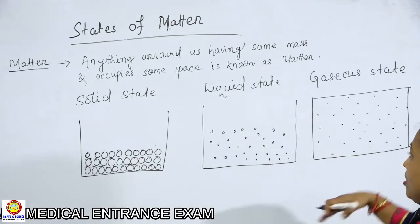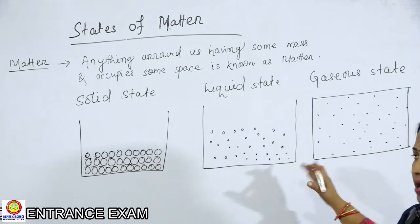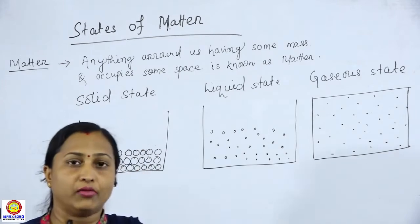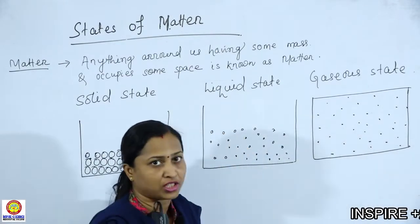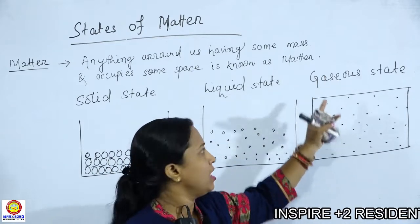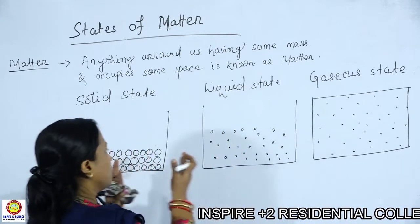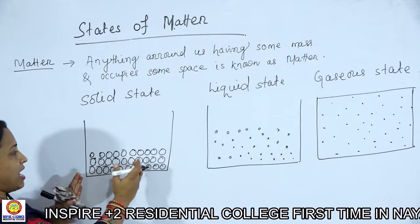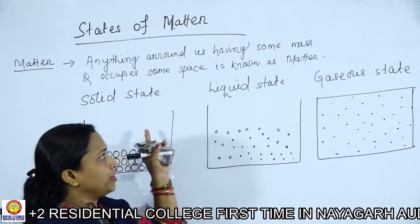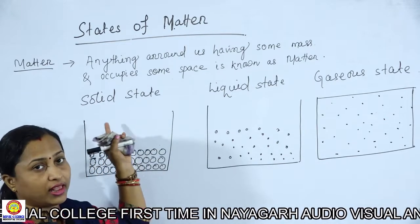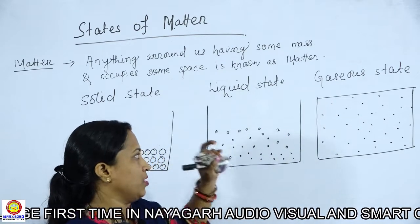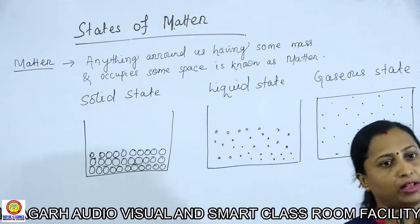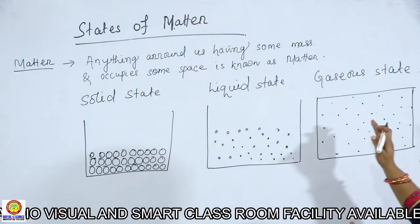The gas can occupy the entire volume of a container because the binding force is very very weak. To compare: in solid the intermolecular forces of attraction are very strong, whereas in liquid they are moderate — lying between solid and gas — and in gaseous state the intermolecular forces of attraction are very very weak, that means negligible.